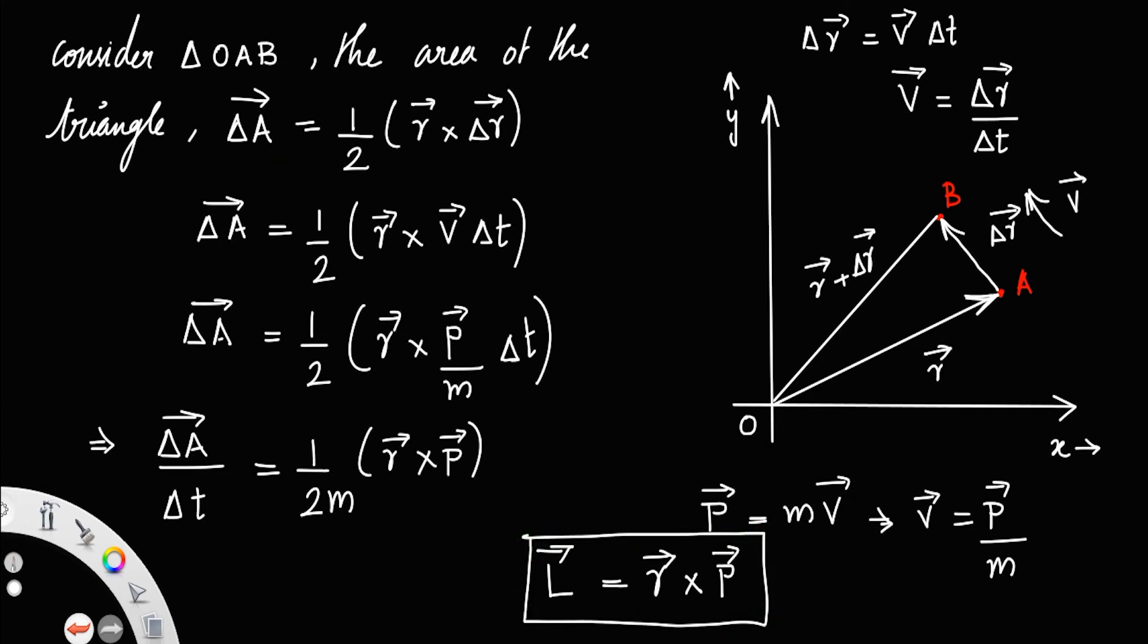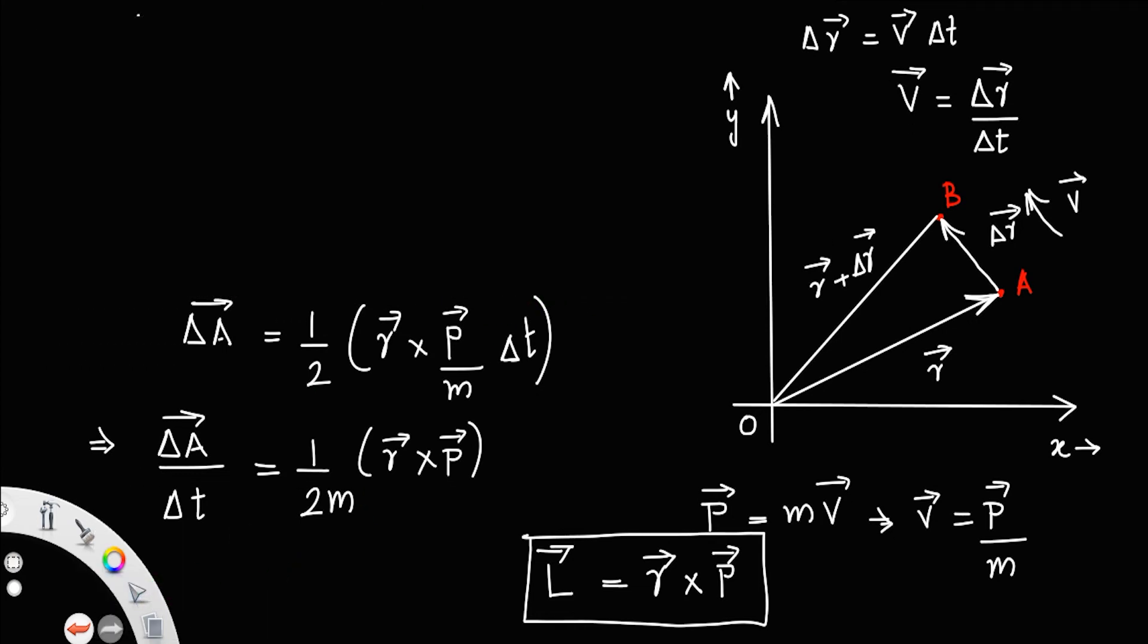So, our final expression will be delta A by delta t is equal to 1 by 2m L or L by 2m.